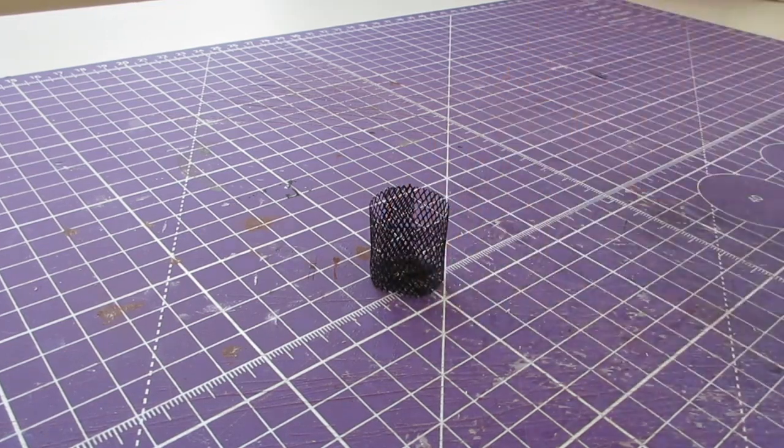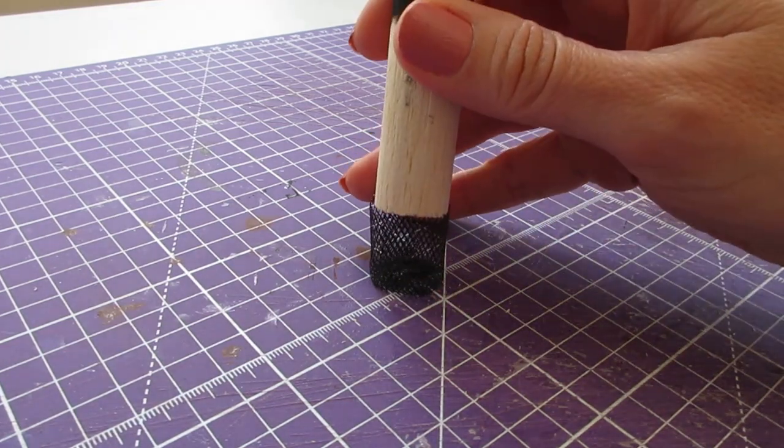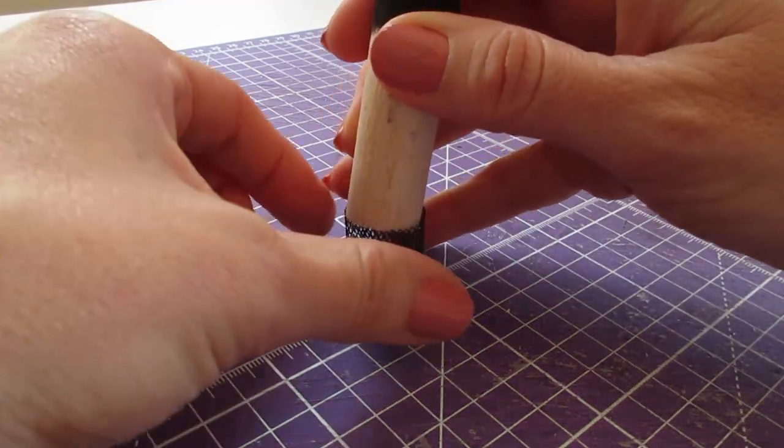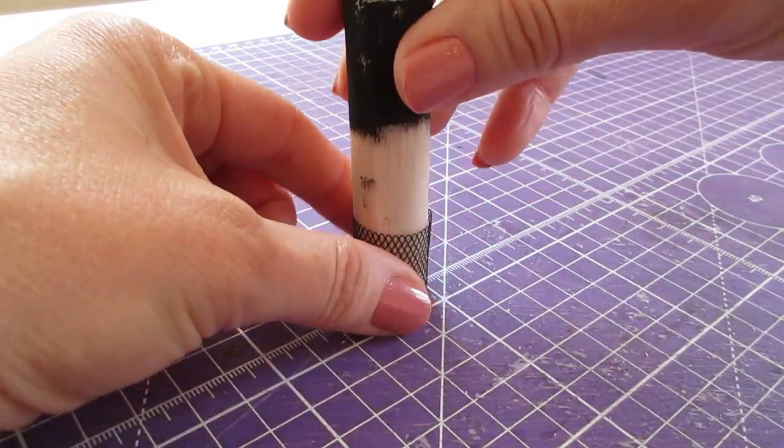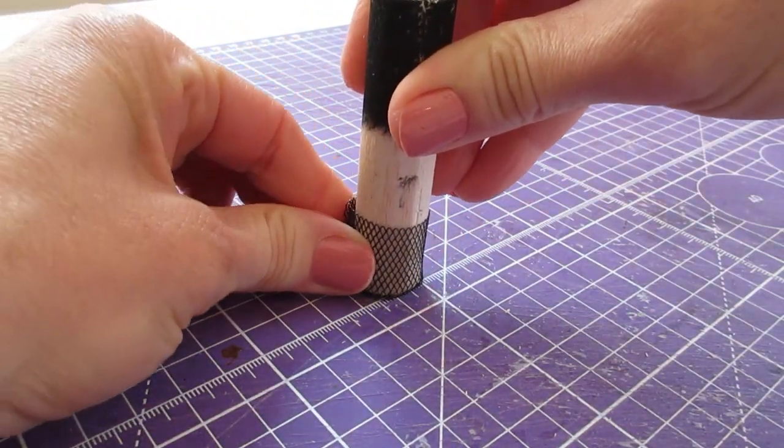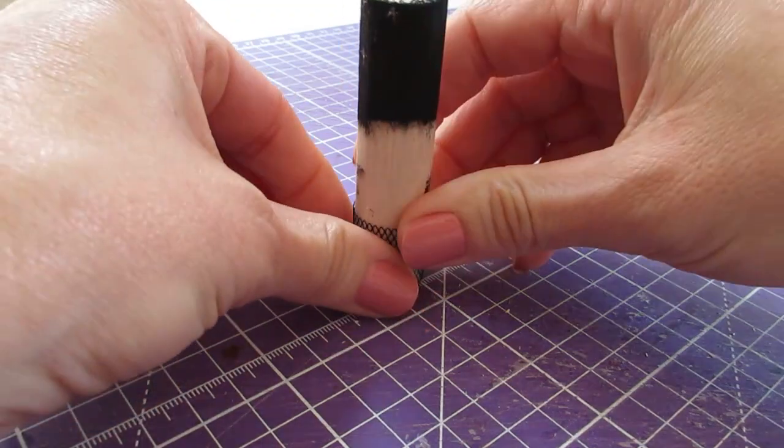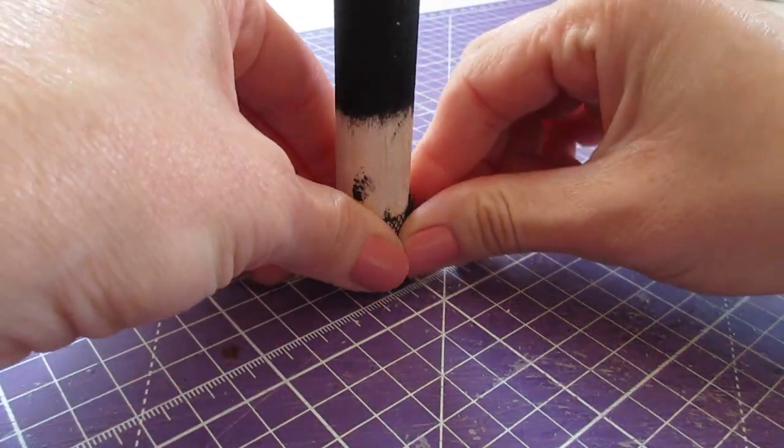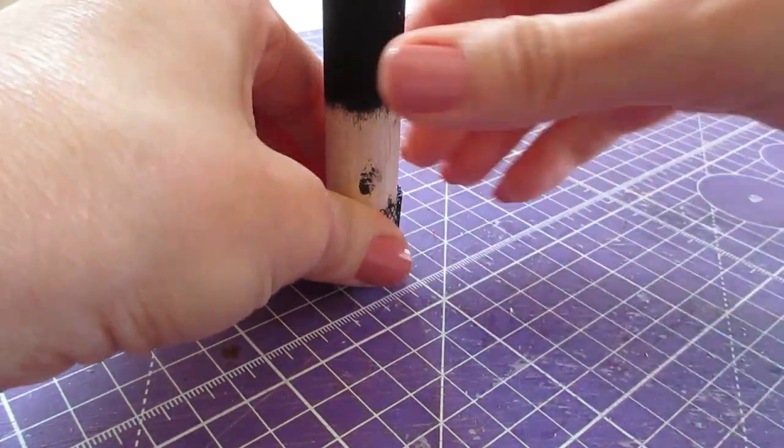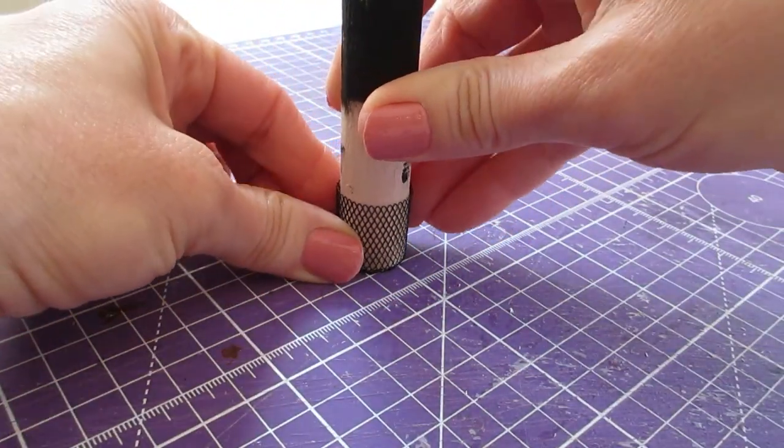Once your paint has completely dried, pop your piece of dowel back inside and reshape the bin if you need to. Just press it around your dowel nice and tightly, pressing the join at the back together so that it doesn't unravel and flatten it down at the bottom.